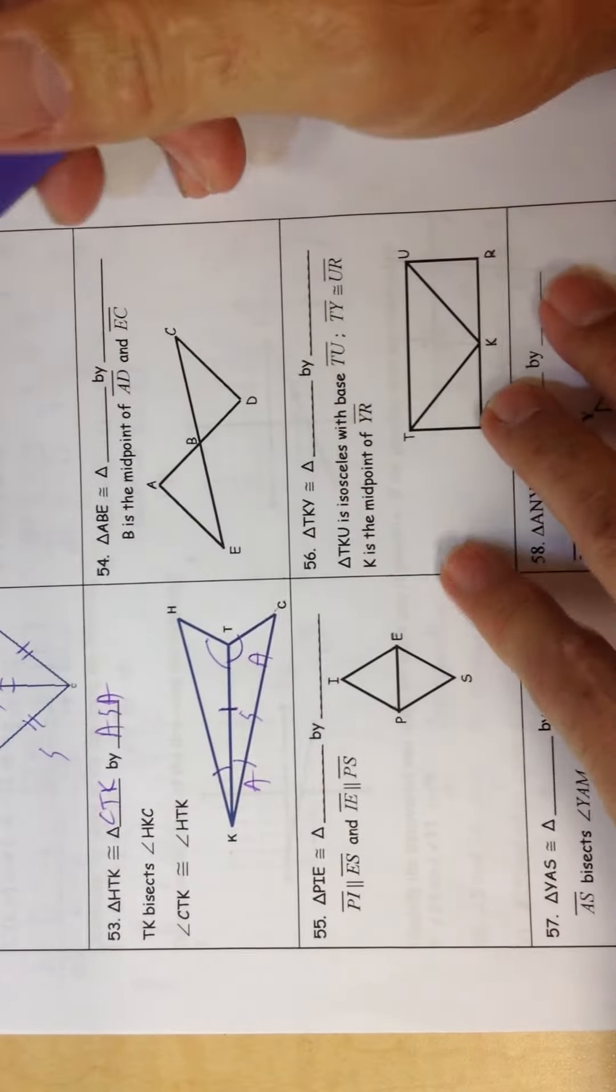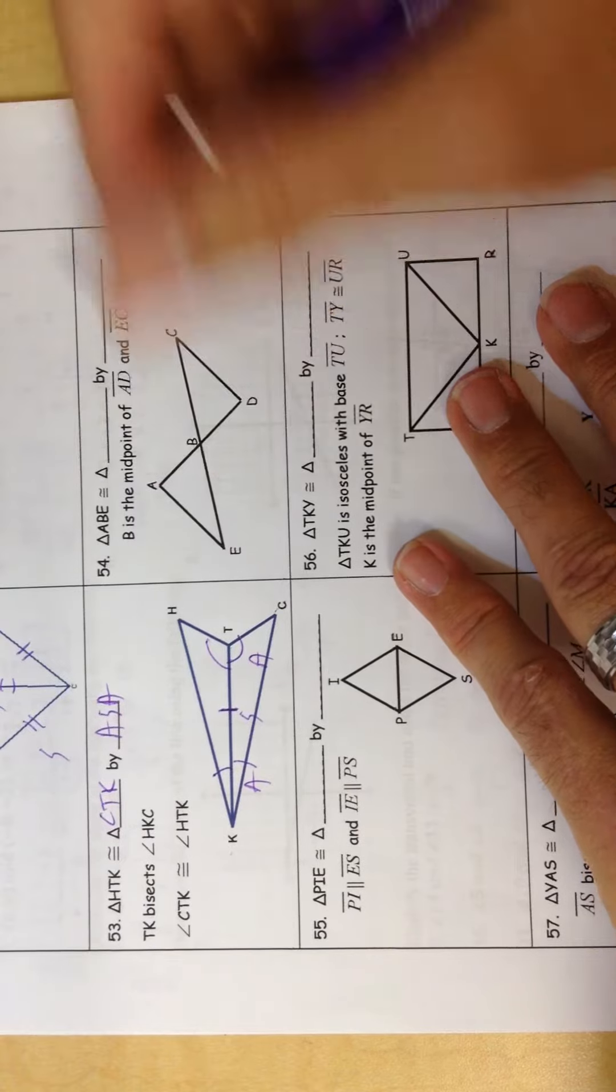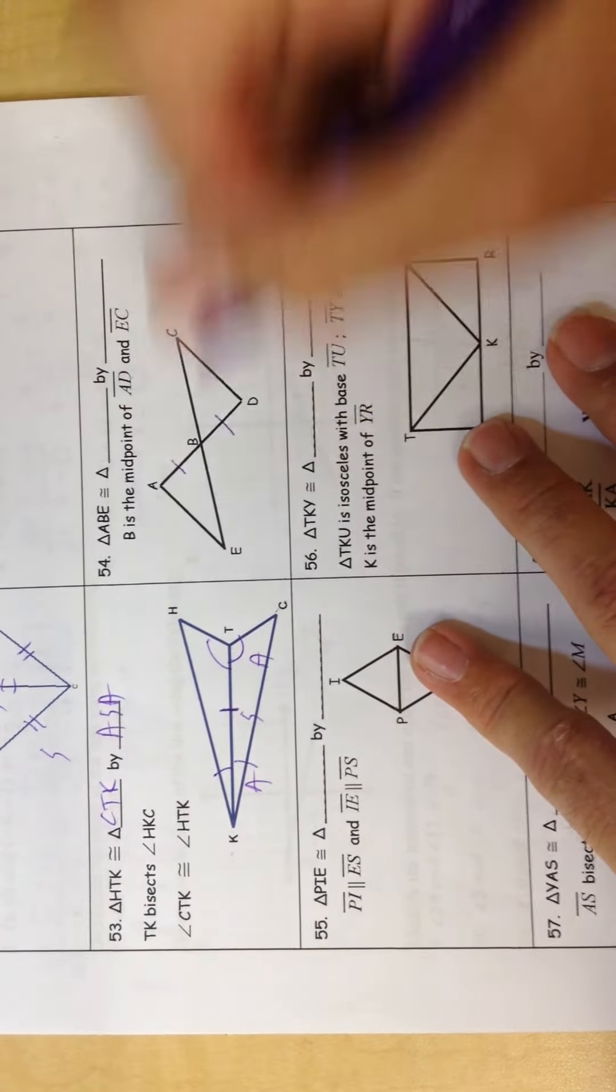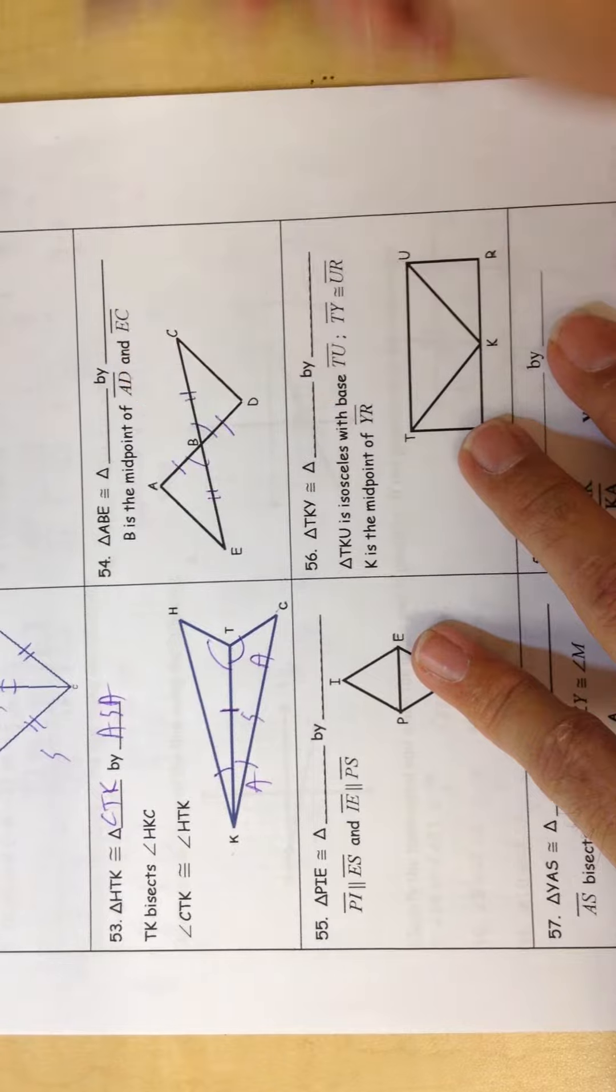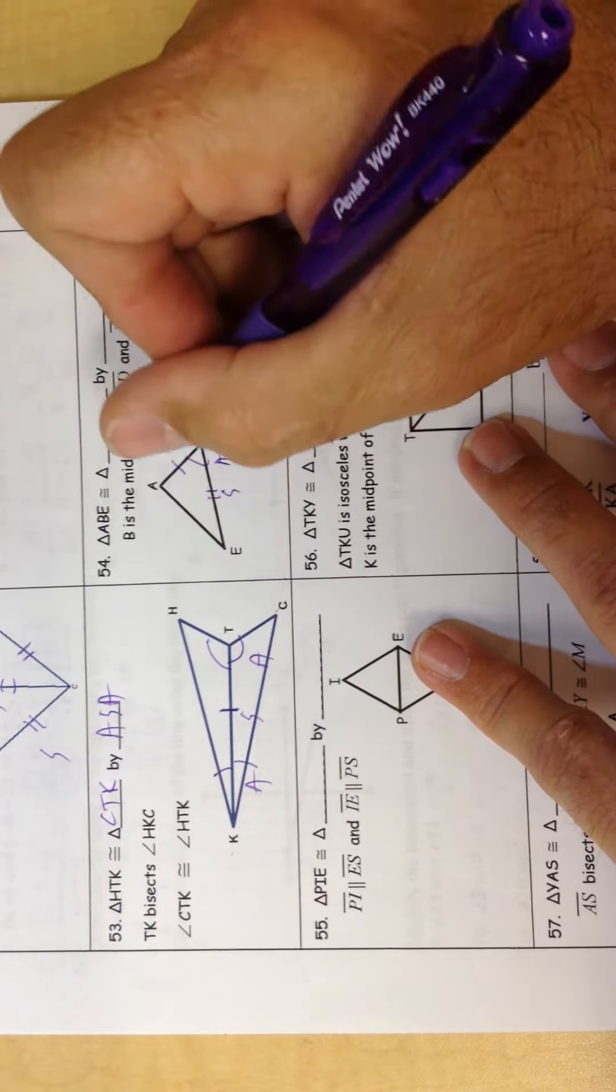Number 54. B is the midpoint of AD and EC, so this is equal to that, and this is equal to that. And these are vertical angles, aren't they? Side, angle, side.